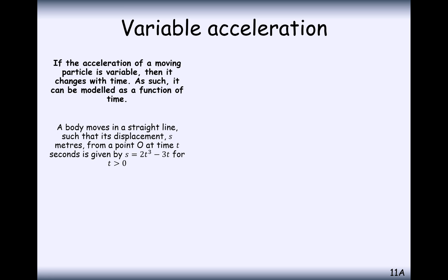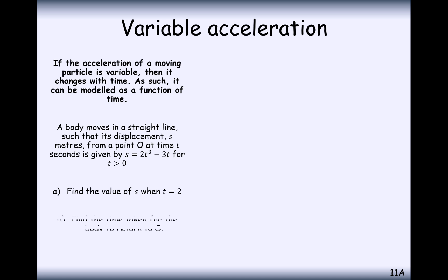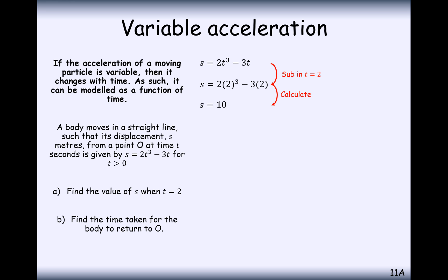So let's go through a few questions. A body moves in a straight line such that the displacement S metres from the point O at time t is given by S equals 2t cubed minus 3t. The displacement is a function of time, so we substitute values for t to find displacement at that point in time. Part A is to find the value of S when t equals 2. We substitute in 2 and get 10, so that's 10 metres. Remember that displacement is just the difference between the starting point and the finishing point.